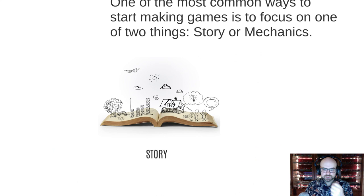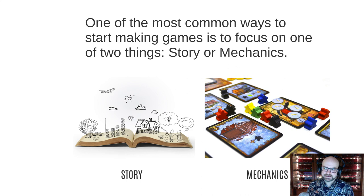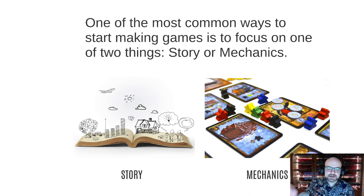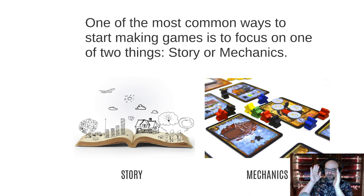One of the most common ways to start making games is to focus on one of two things. You might say, 'I want to make a game about princess dragons collecting Easter eggs' — that's a theme, really, with mechanics kind of embedded in it; the thing is really about the world. Another way to focus is to say, 'I have this awesome idea about moving meeples with random rangers pulled out of a bag' — that's a focus on a mechanic that you think is going to be fun, and you then find a story to go with it.